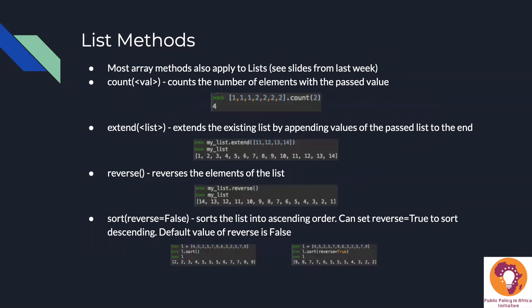Per usual, we have list methods. Most array methods from last week also apply to lists. Here are some we didn't cover with arrays. The count method accepts a parameter value and counts the number of elements in your list with that value. For example, a list with three ones and four twos: calling dot_count(2) returns four, because there are four twos in the list.